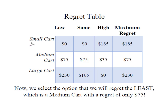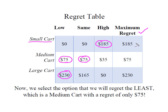Now I'm going to go into each decision alternative and figure out the highest regret under each alternative, and move those over to the maximum regret column. Remember, this is a minimax — so I want to select the minimum of the maximum. The decision that I will regret the least is opening the medium cart, because it has a maximum regret of only $75.